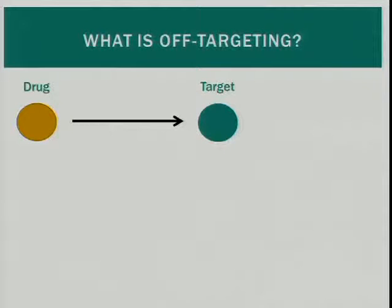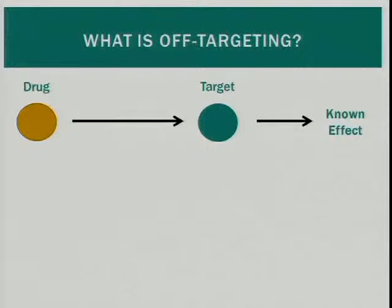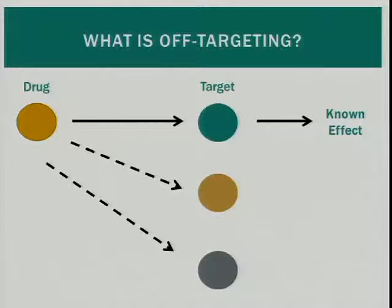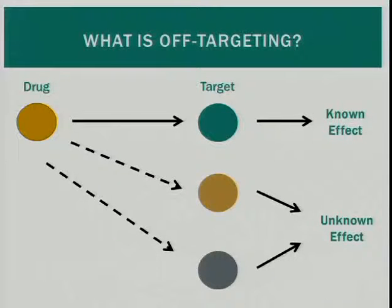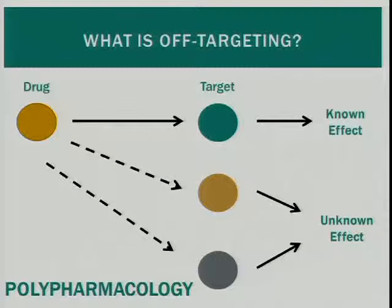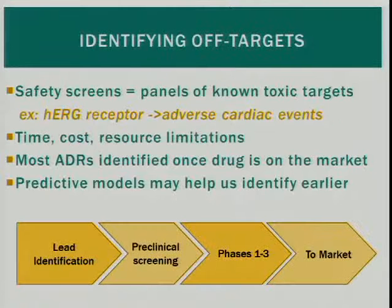To understand the context of off-targeting: most of the history of drug design has been steeped in the paradigm that we can design a drug to selectively bind to a target and that target will have some therapeutic effect. But what we've found in recent years is that drugs bind to multiple targets, and these targets can have different effects. This phenomenon is known as polypharmacology, and we're only just starting to recognize and try to deal with it in both drug design and clinical use.